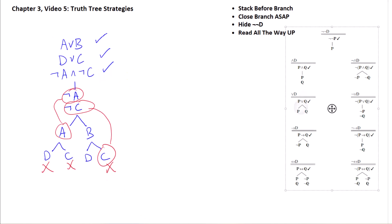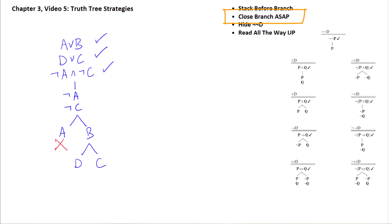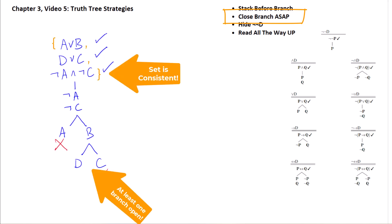We could have saved time by realizing, as soon as we decomposed that A-or-B disjunction, that we already had the A / not-A contradiction. We can close that branch immediately and don't have to do any further work on it. We just complete the D-or-C disjunction on the still-open branch, which closes it, leaving only the branch ending in D still open. This saves a little time.